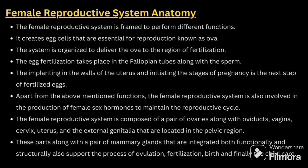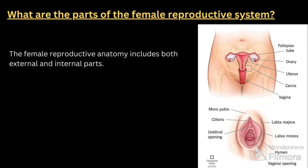The female reproductive system anatomy: the female reproductive system is framed to perform different functions. It creates eggs that are essential for reproduction, known as ova. The system is organized to deliver the ova to the region of fertilization. Egg fertilization takes place in the fallopian tube along with the sperm. The next step is implanting in the wall of the uterus and initiating the stage of pregnancy. The female reproductive system includes both external as well as internal parts.